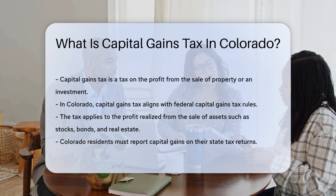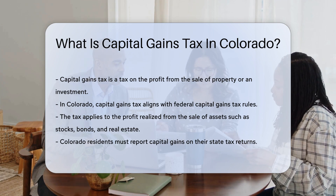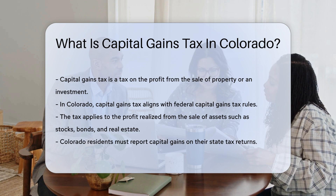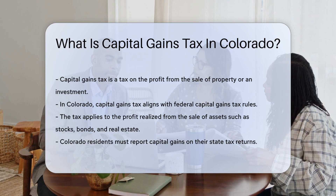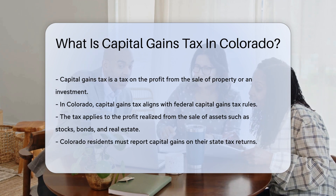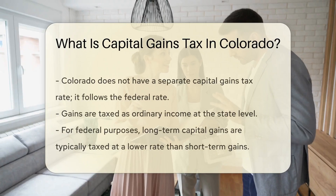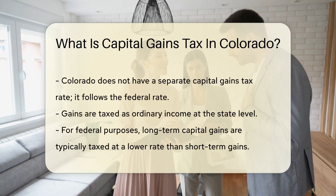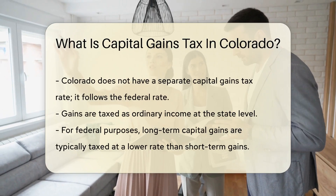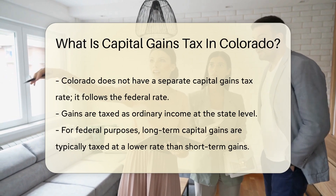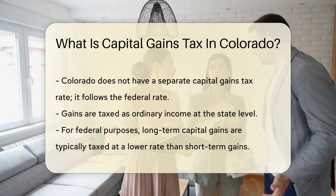The tax applies to the profit realized from the sale of assets, such as stocks, bonds, and real estate. Colorado residents must report capital gains on their state tax returns. The state does not have a separate capital gains tax rate — it follows the federal rate. This means that the gains are taxed as ordinary income at the state level.